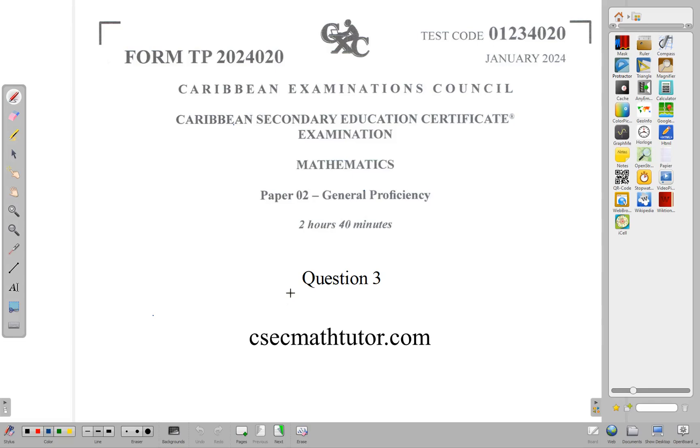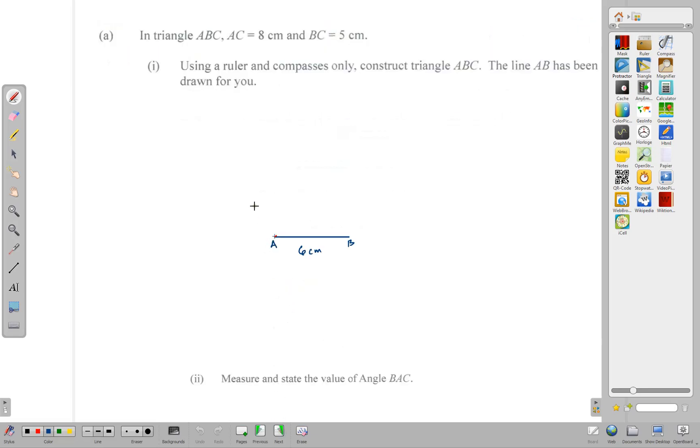Hello and welcome back. In this video we are looking at the solution for question 3 on the January 2024 CSEC mathematics paper 2. We begin with question 3 part A. It says in triangle ABC, AC is 8 centimeters, BC is 5 centimeters, and the third side AB has been drawn and measured to be 6 centimeters.